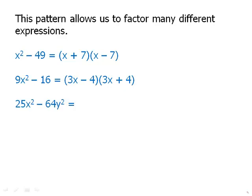For 25x squared minus 64y squared: the first term is 5x quantity squared, and the second is 8y quantity squared. So a equals 5x and b equals 8y. This factors into 5x plus 8y times 5x minus 8y.